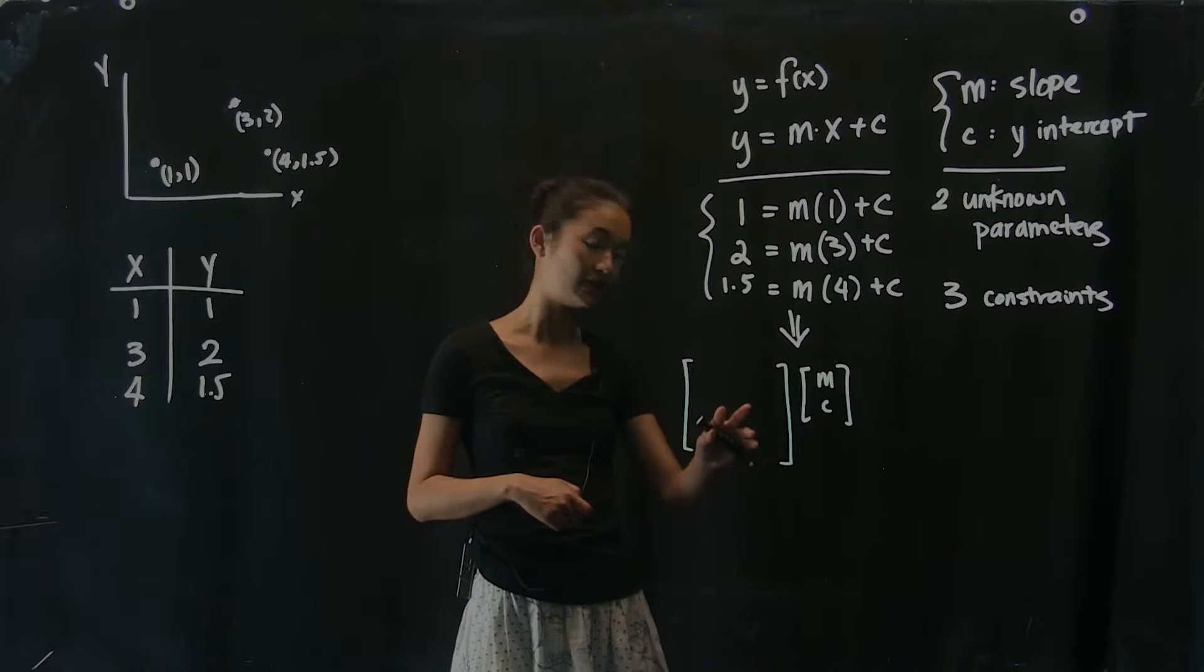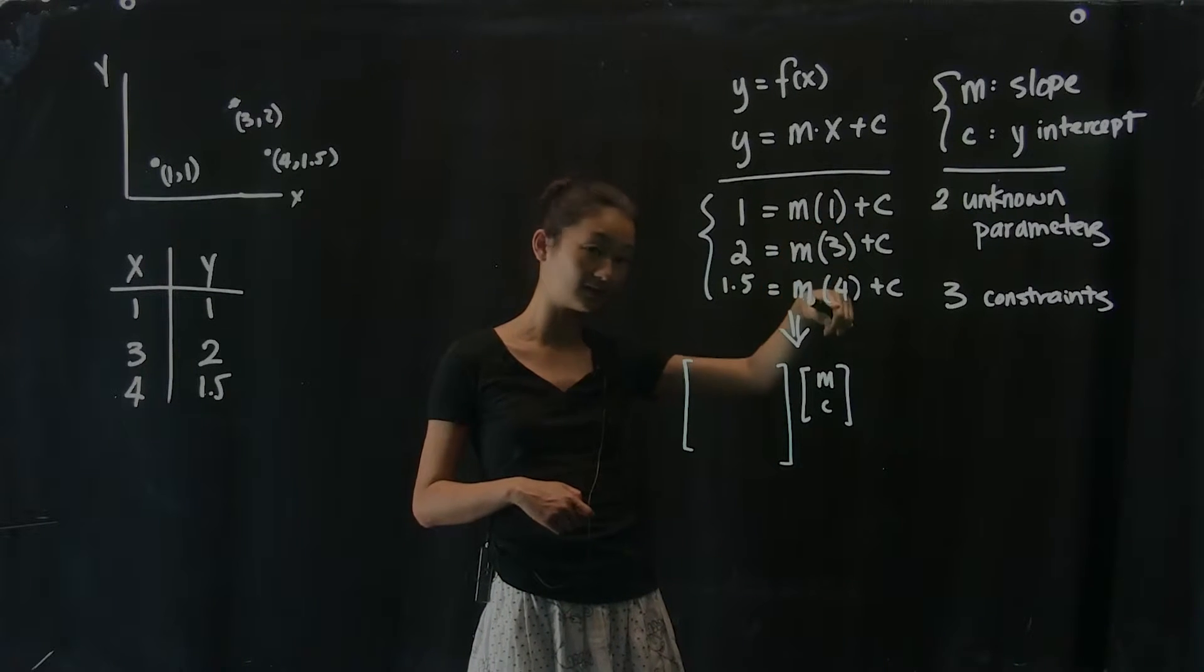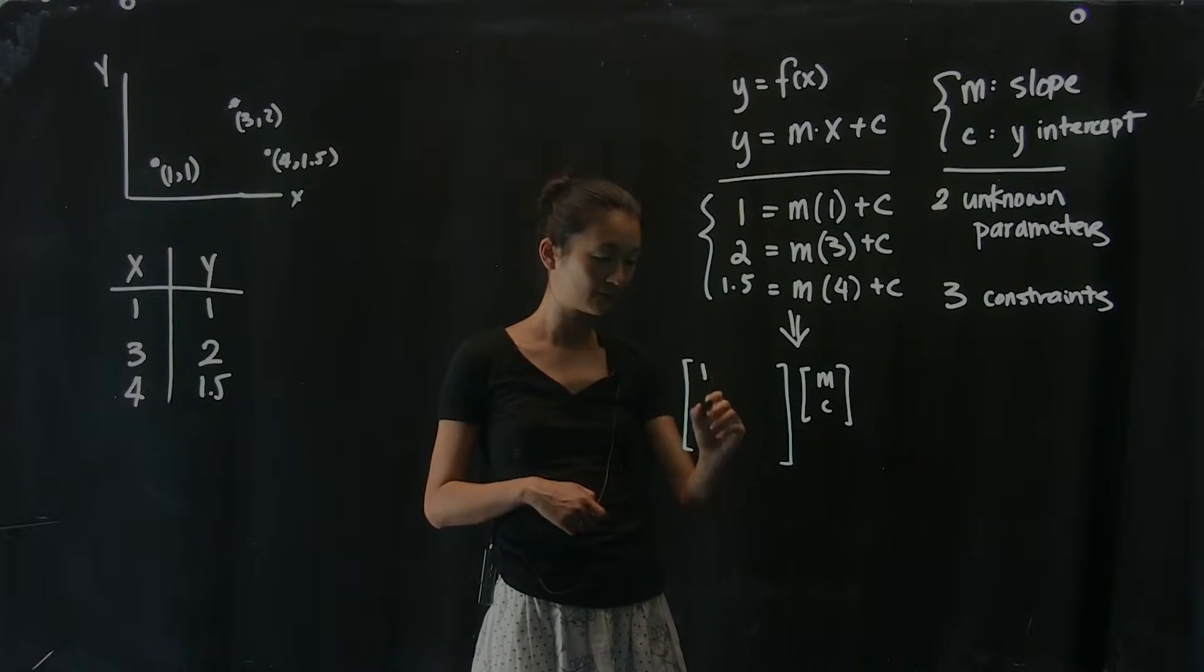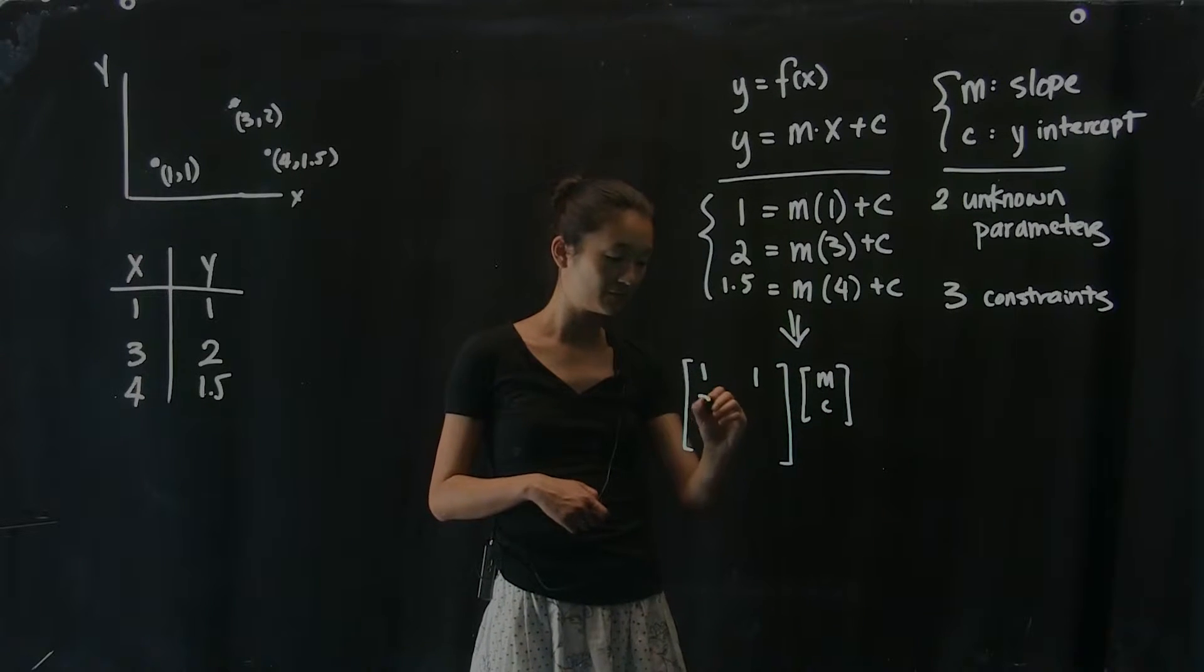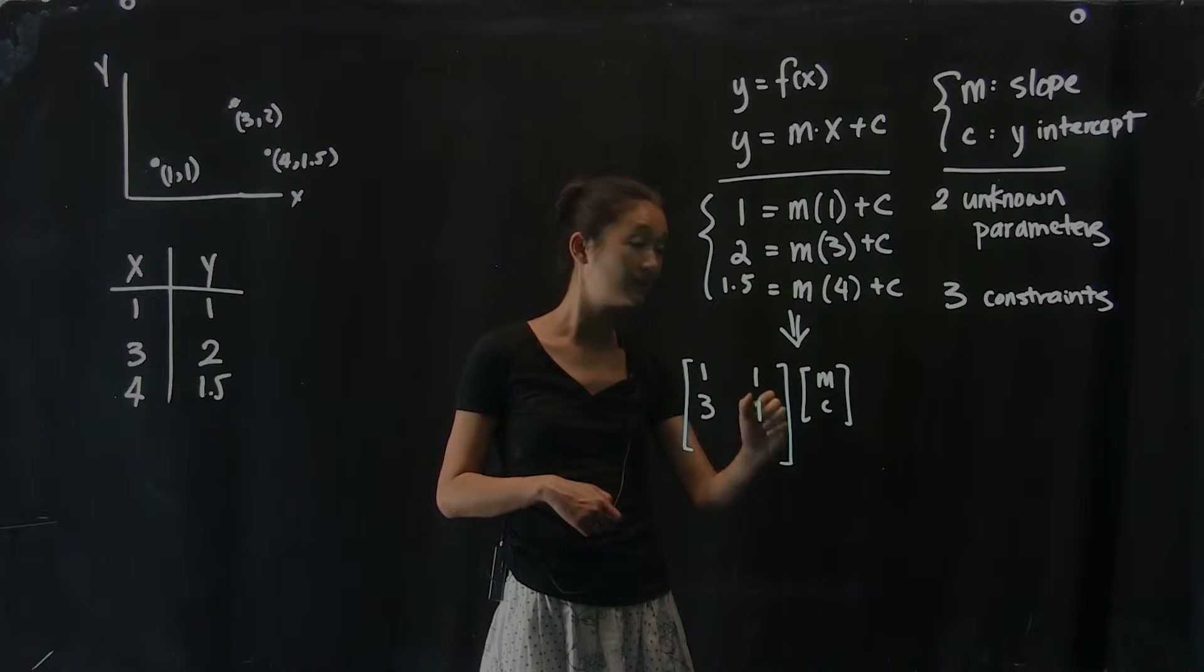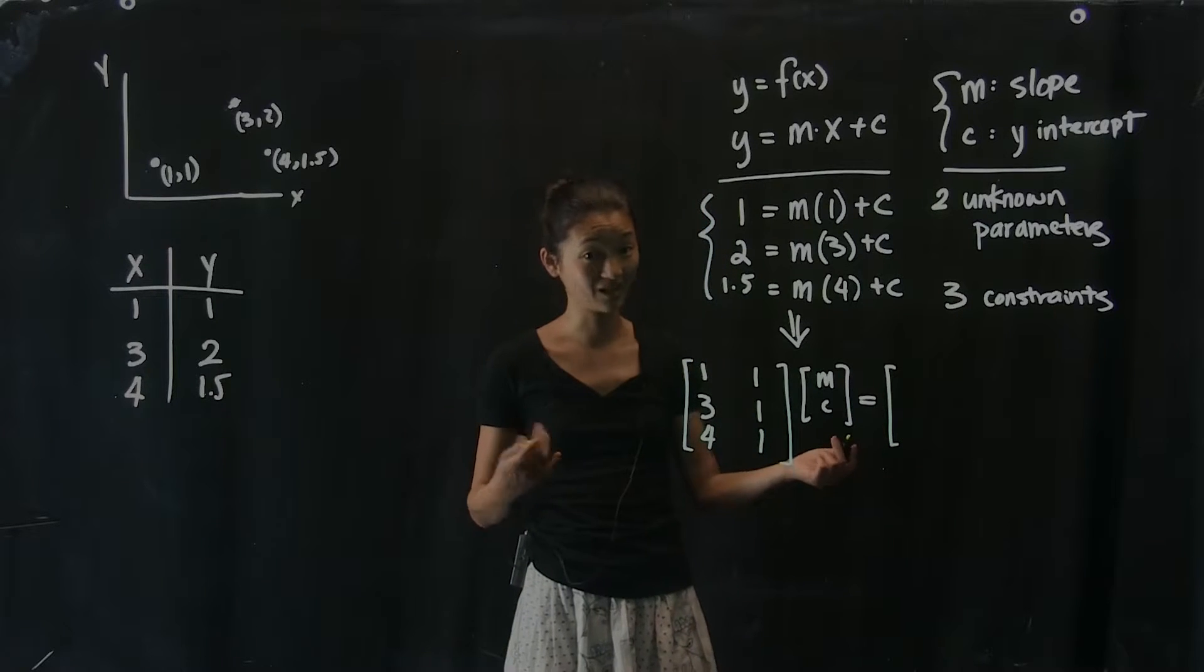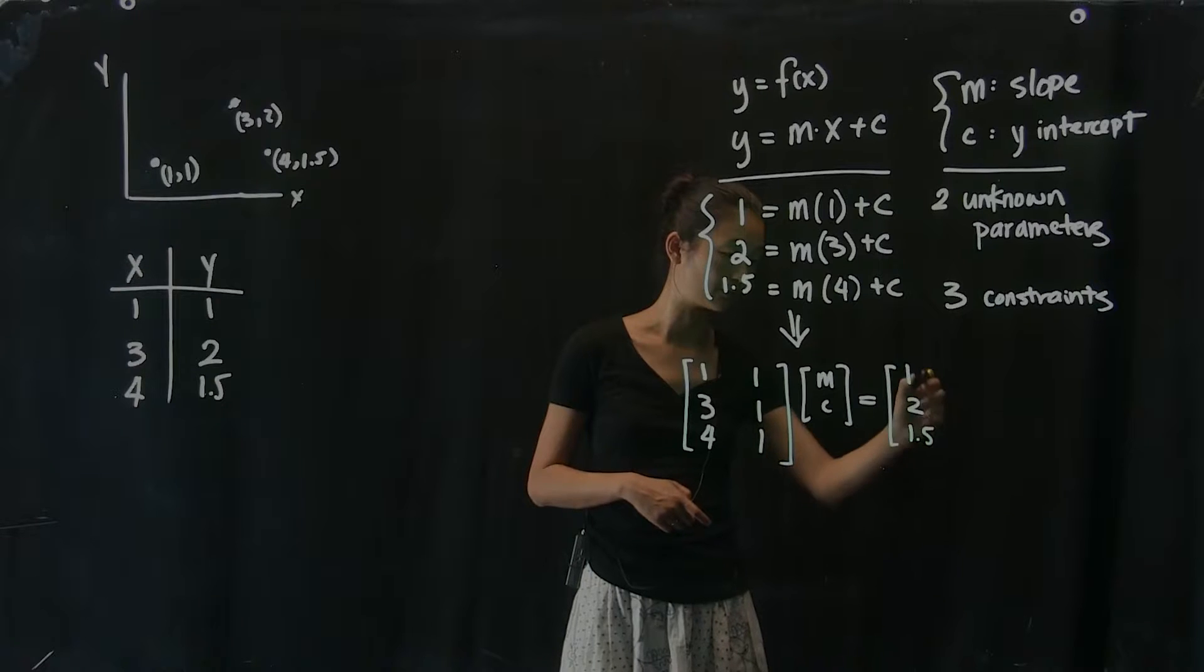Now, in order to construct this A matrix here, what we're going to do is just read off from this list here. So I'm going to multiply m by 1 plus 1 times c. Pardon me. We have 3 times m plus c. And then we have 4 times m plus c. And all of that has to equal, at least approximately, 1, 2, and 1.5. This is now my matrix of, these are my matrices and how I set up my system of equations.